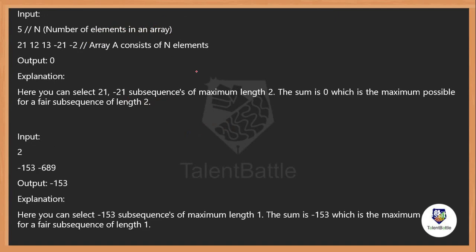The first test case has N equals 5, with the array: 21, 12, 13, -21, -2. The output is 0. Why? If I select the first element as positive (21), after this I have to select a negative element, so I go to -21. Then there is no more positive element, so we complete the array iterations with 21 and -21, which gives a sum of 0. The maximum possible length is 2 and the sum is 0. In the second test case, N equals 2, with -153 and -689 — both negative — so only one element can be selected, giving length 1.